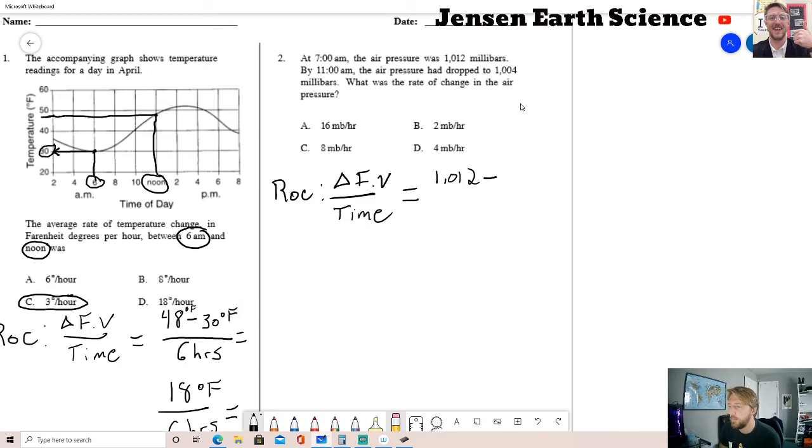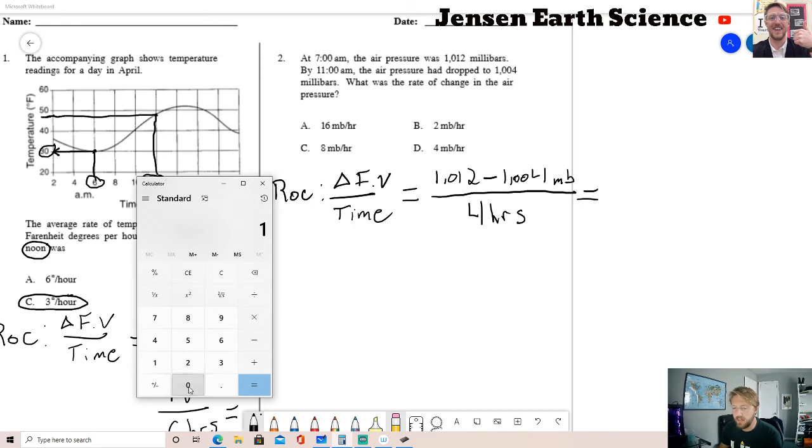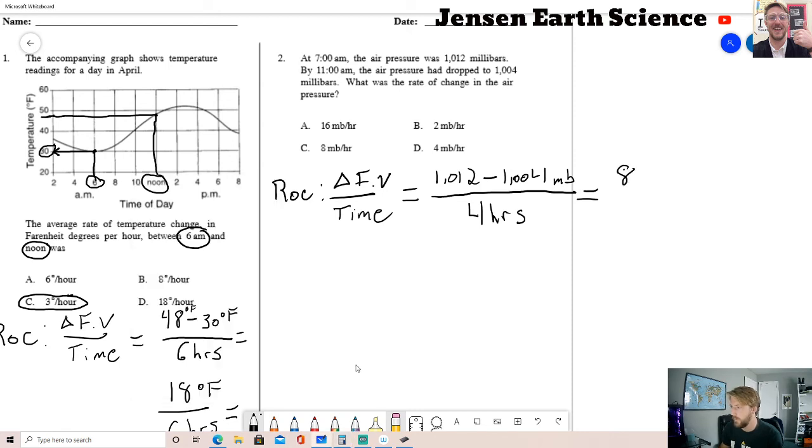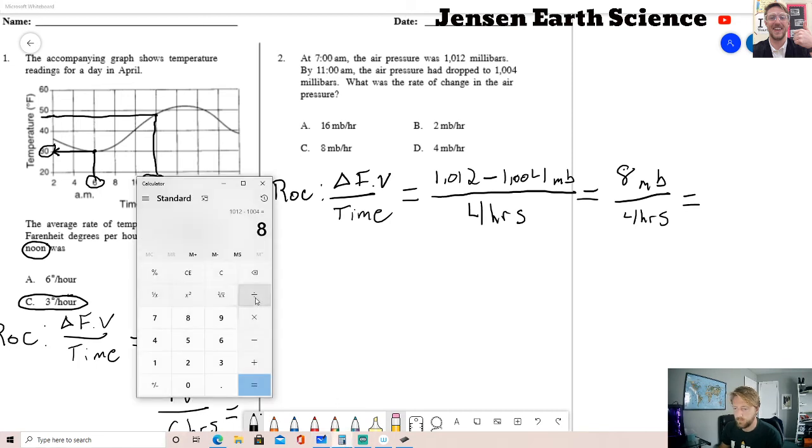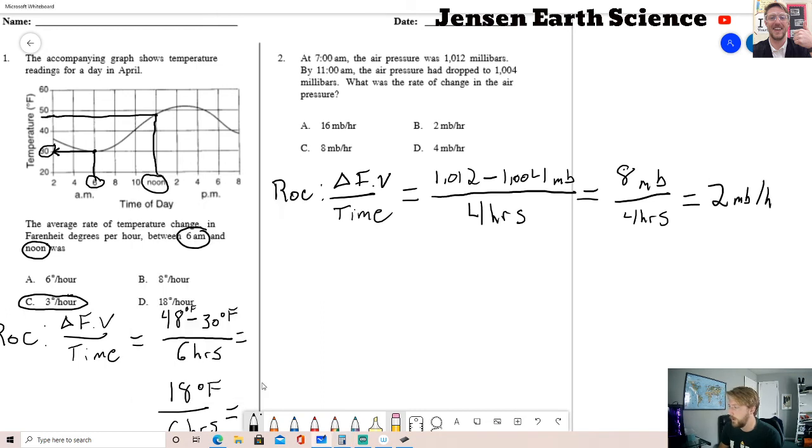Is my higher number minus 1,004 millibars over the time, which was 7, 8, 9, 10, 11, four hours. I'll just use my calculator: 1,012 minus 1,004 gives us eight, eight millibar difference over four hours will then give us two, top per bottom, millibars per hour.